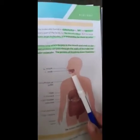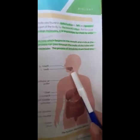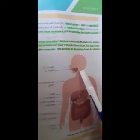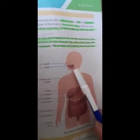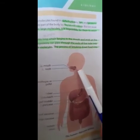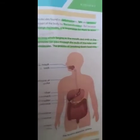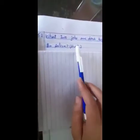If you look at the book page, you can see this and this — these are the salivary glands. They produce a liquid called saliva, and it is produced in the mouth. So, the question asks: what two jobs are done by the saliva?